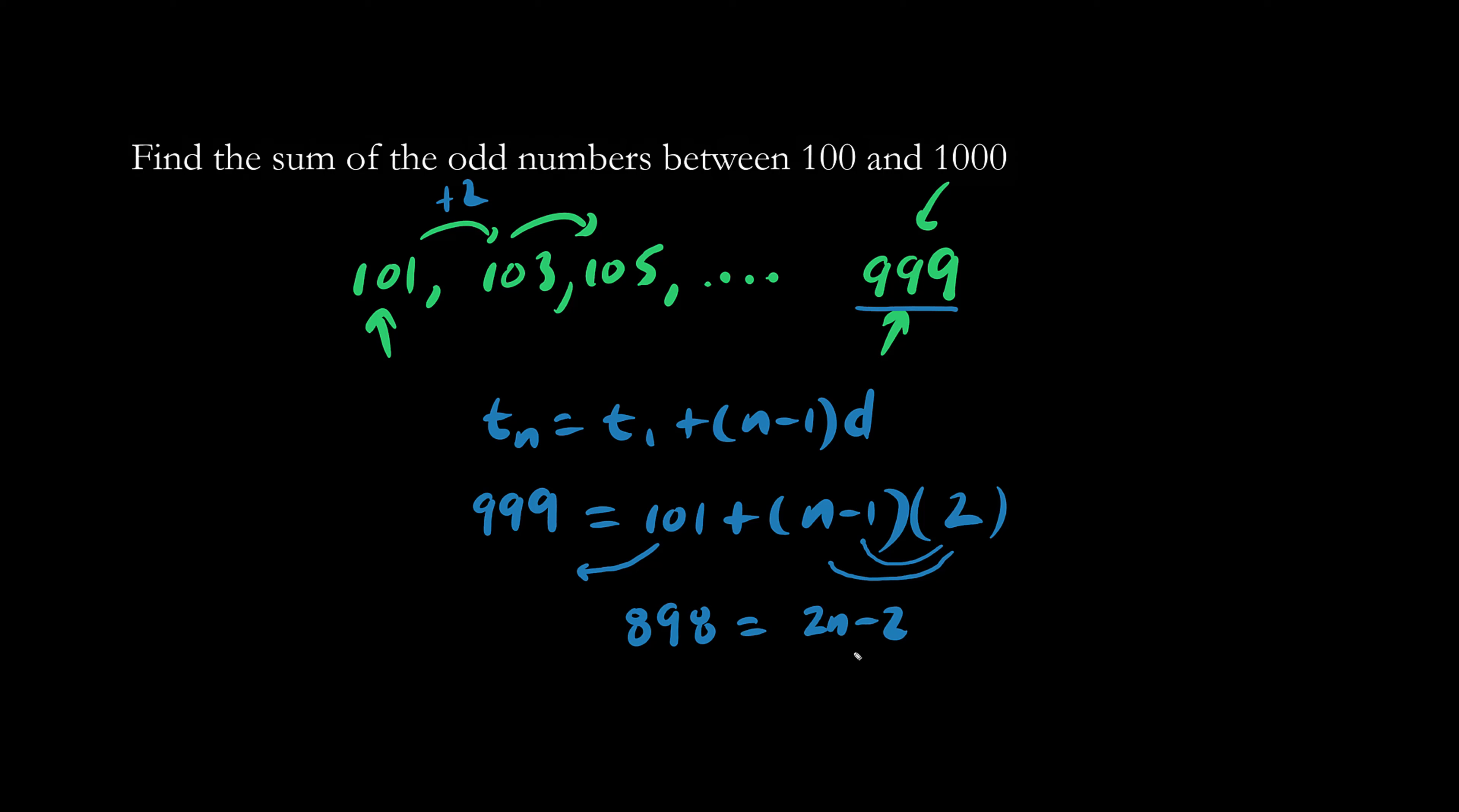We simply add 2 to both sides and we get 900. So therefore n equals half of 900, which is 450. So there's 450 terms in this series.